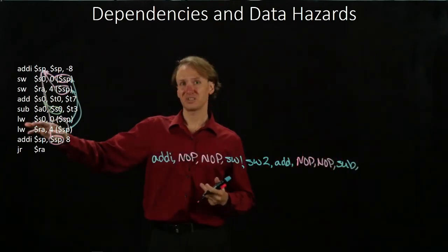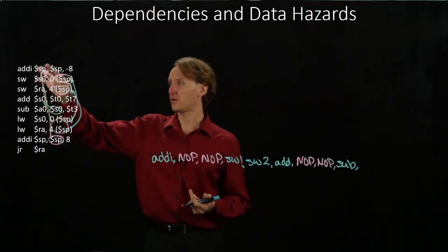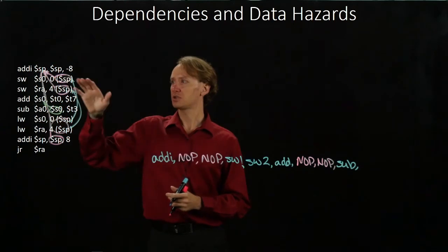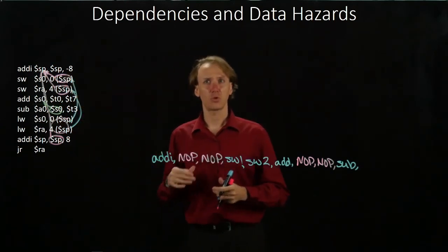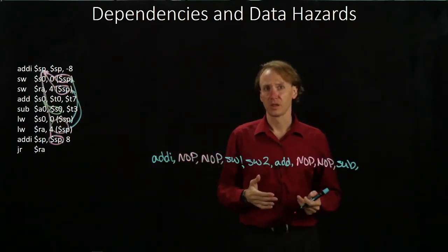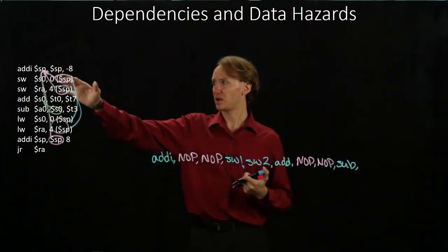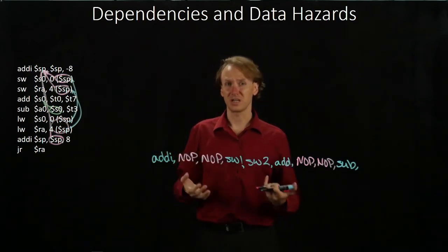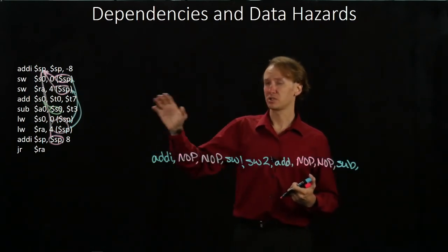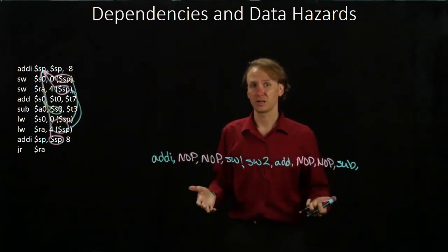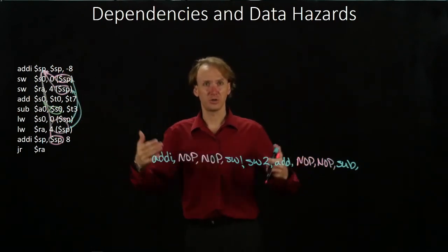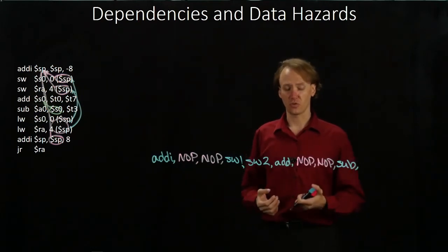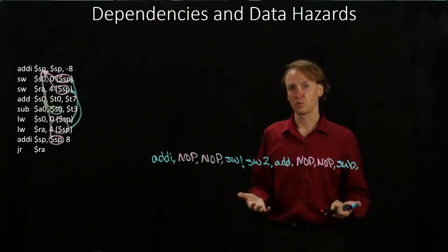My load word instruction depends on two things. One is that I've updated the stack pointer which, again, happened a long time ago. The other is that I've updated stack pointer plus zero in memory. I would store this piece of data into memory in stage four. I would also read it back out of memory in stage four. So I could actually run these two instructions back to back and there wouldn't be any problems. Further, there's also been a huge wait between them. So, again, there isn't going to be any problems for us. We will be able to run that load word instruction immediately.